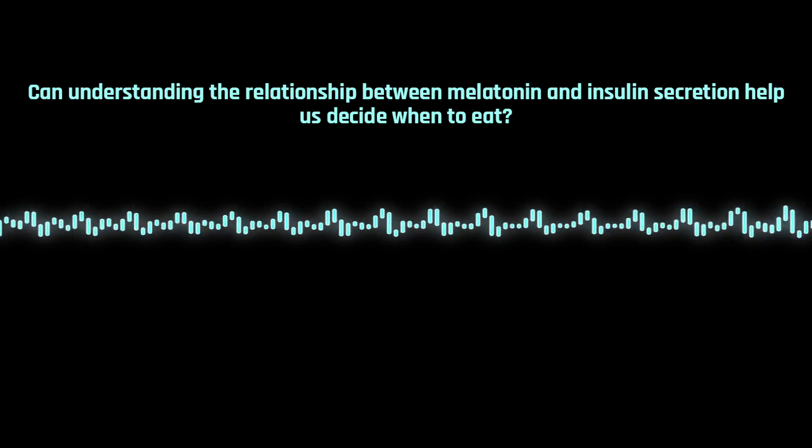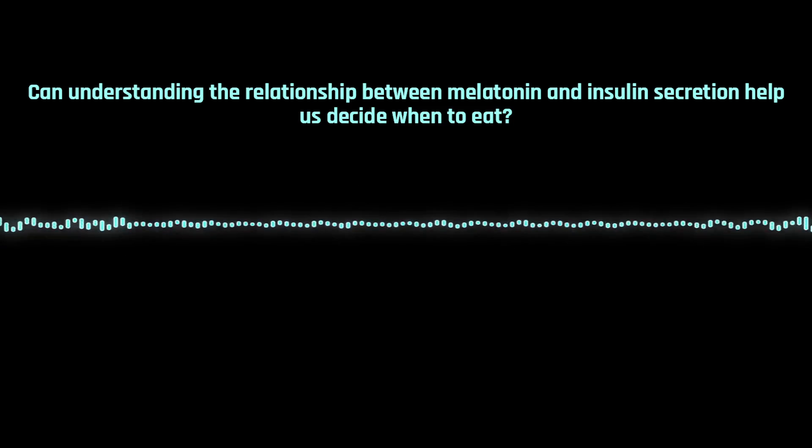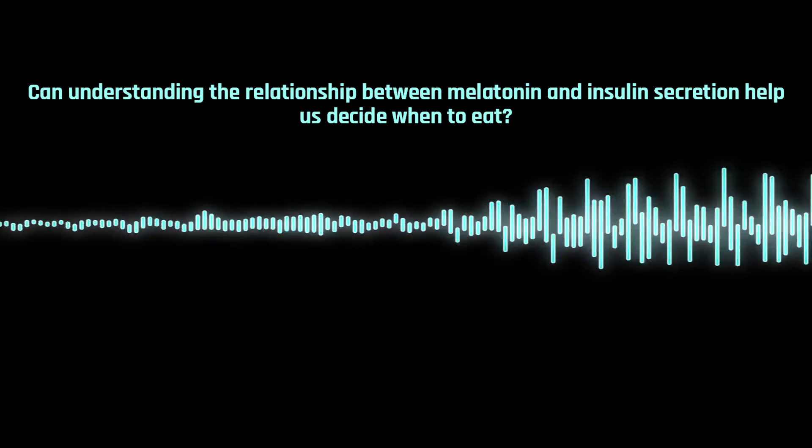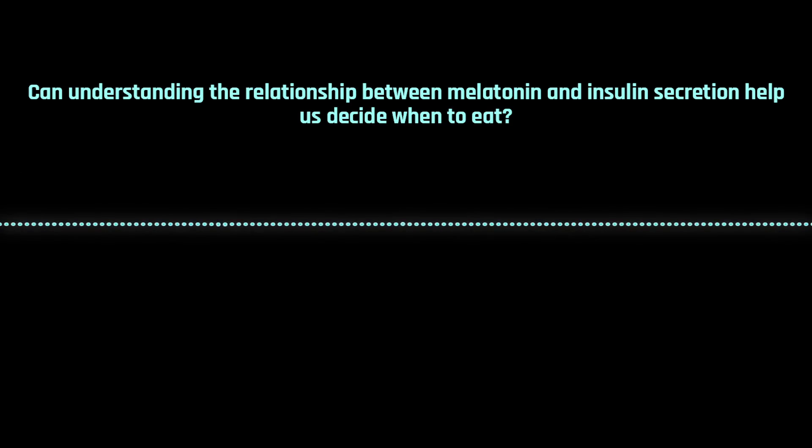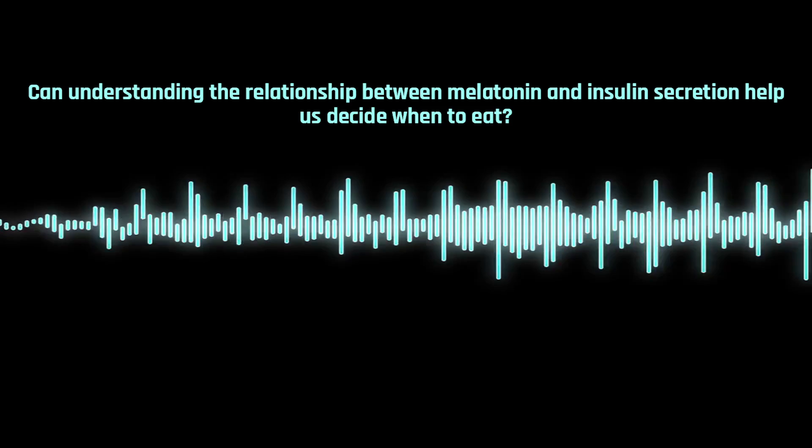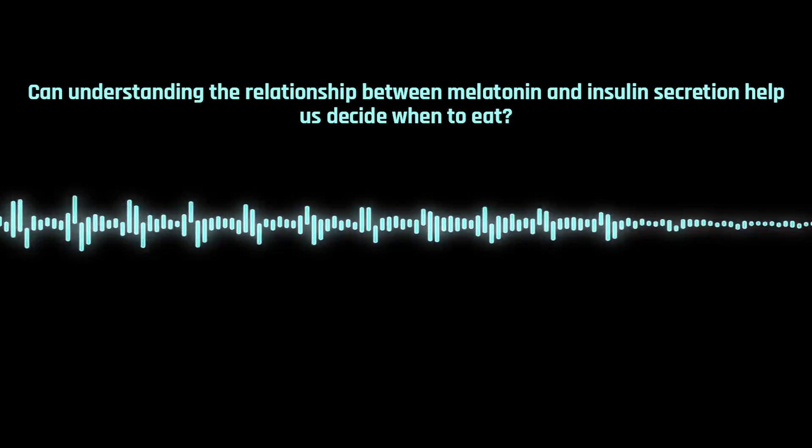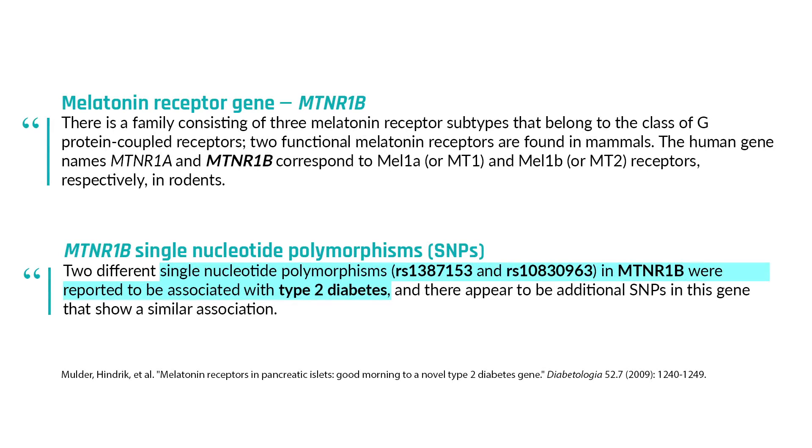Yes, this connection between melatonin and glucose is relatively new because in 2009, simultaneously four different papers came out from human genetic studies showing that people with diabetes or increased fasting blood glucose level have a polymorphism or mutation in a melatonin receptor gene. And that was really perplexing because until then, melatonin was supposed to have its function only on sleep.